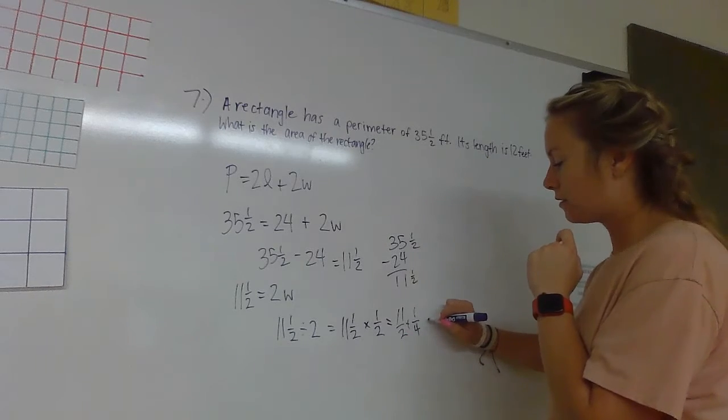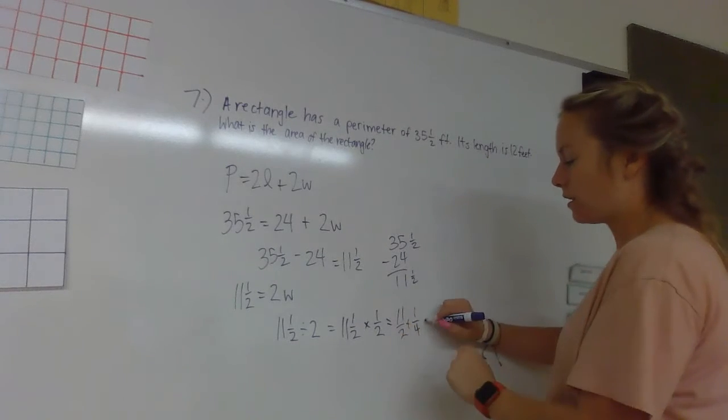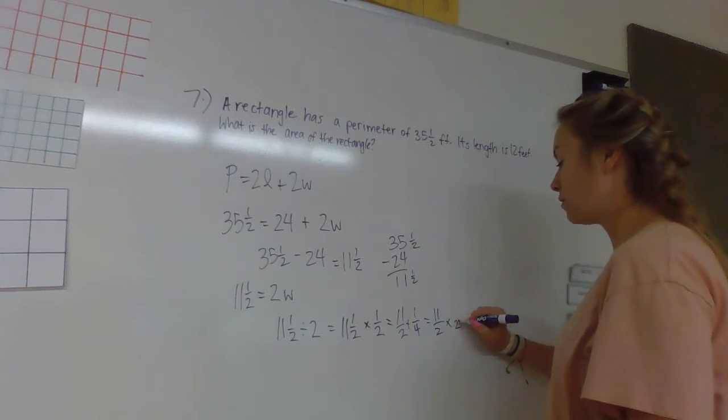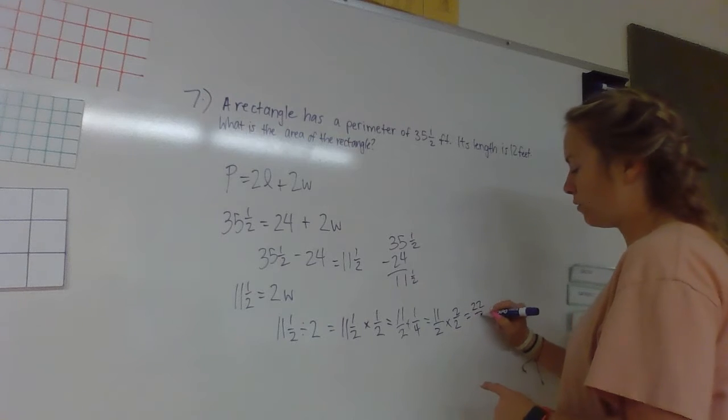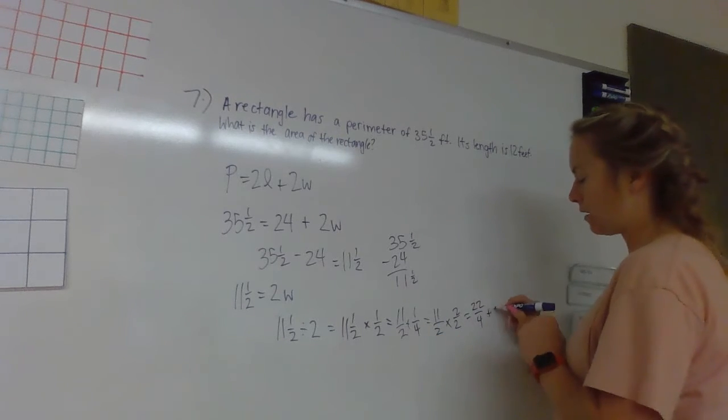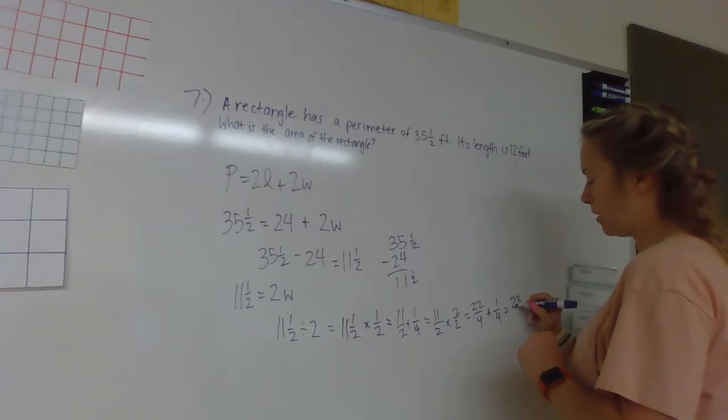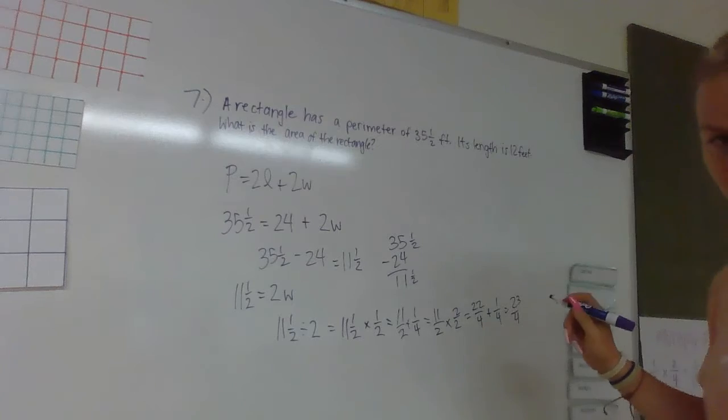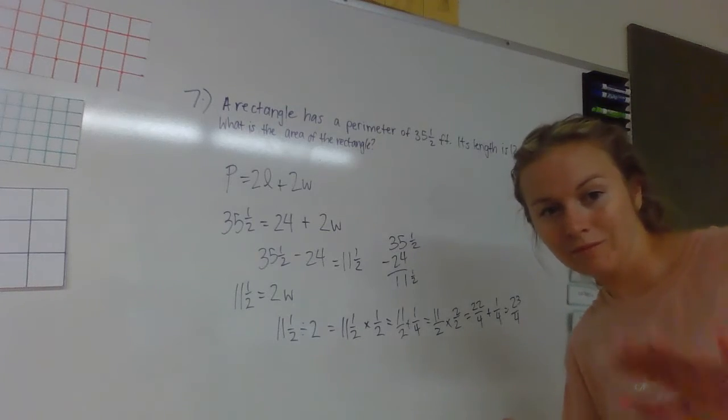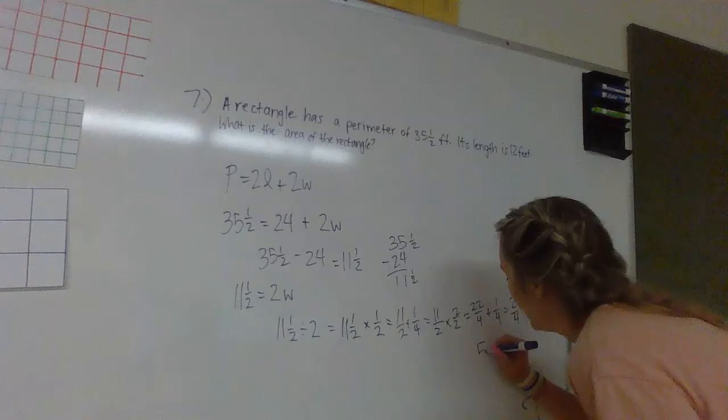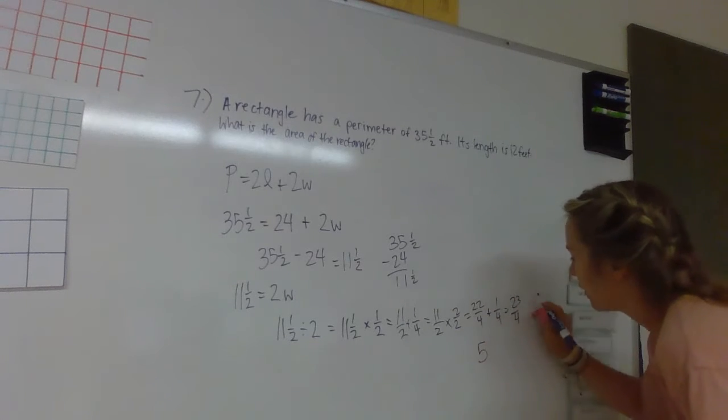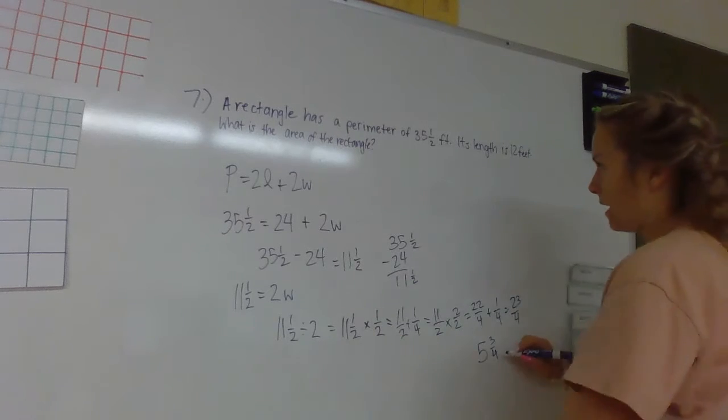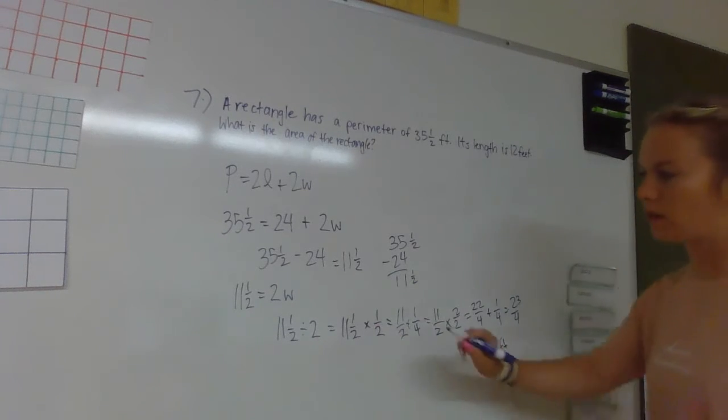So this now can become 11—2 times 2 over 2—equaling 22/4, and we plus our 1/4 and that's 23/4. 23/4—how many times does 4 go into 23? Five times with 3 left over, so 5 and 3/4 feet is our width.